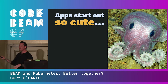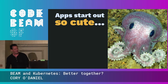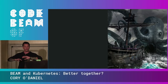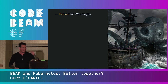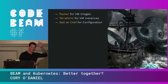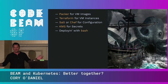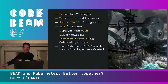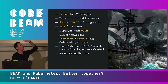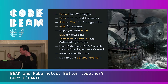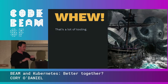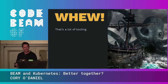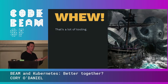I want to look at these three features from the point of view of our applications, which start out so cute. We have a monolith, 4% code coverage, deploying with SSH. Then stuff goes wrong. All of a sudden we've got Packer for VM images, Terraform for VM instances, Salt and Chef for configuration, KMS for secrets, deploying with Bash, no rollbacks, Terraform and AWS CLI for auto-scaling groups, load balancers, DNS records, health checks, access controls, ports, firewalls, IAM. Do you need a service mesh? That's a lot of tooling.